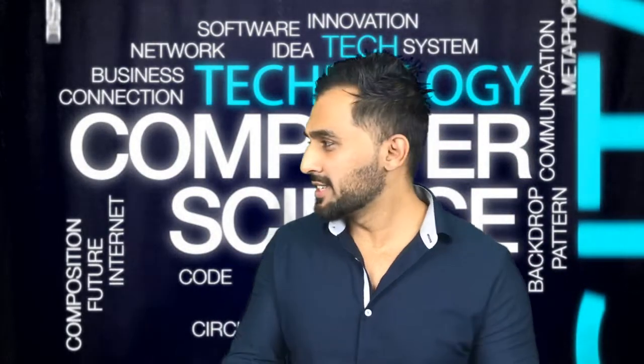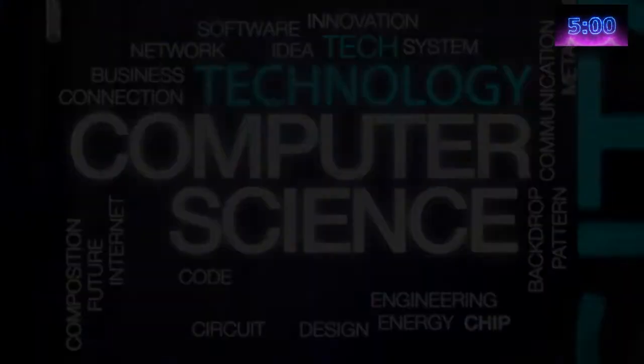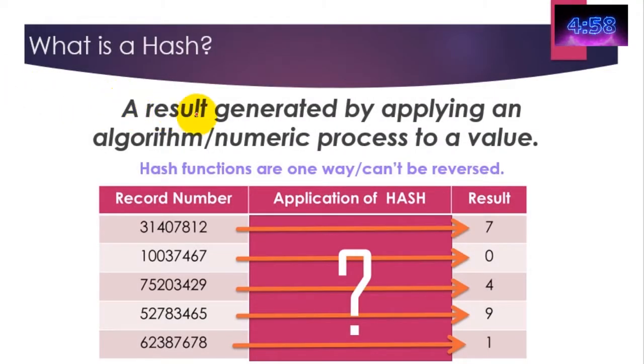A hash is a result generated by applying an algorithm or numeric process to a given value. So what do I mean by this? Well, here's a given value—say this was a hospital and it was a patient record number. The patient record number would be put through an algorithm, some kind of process, and it would then generate a result.